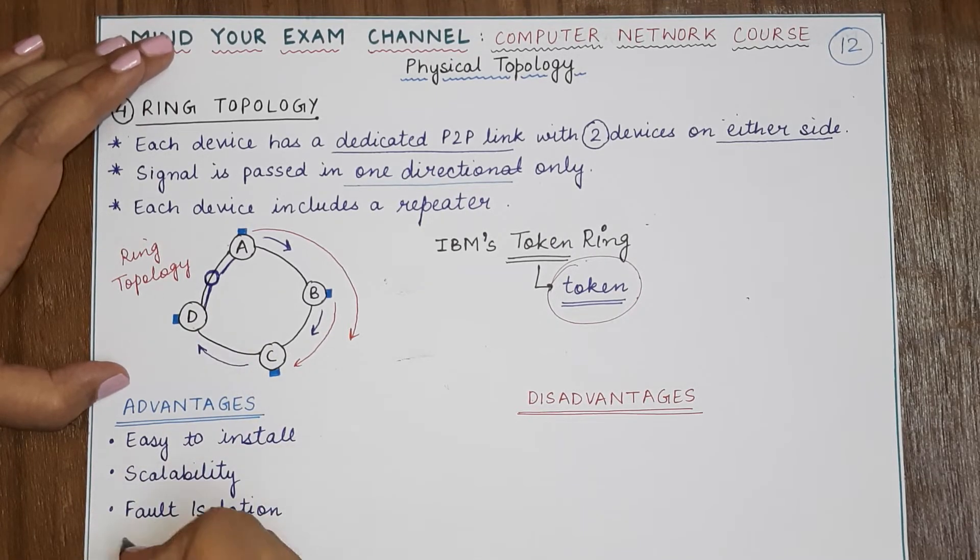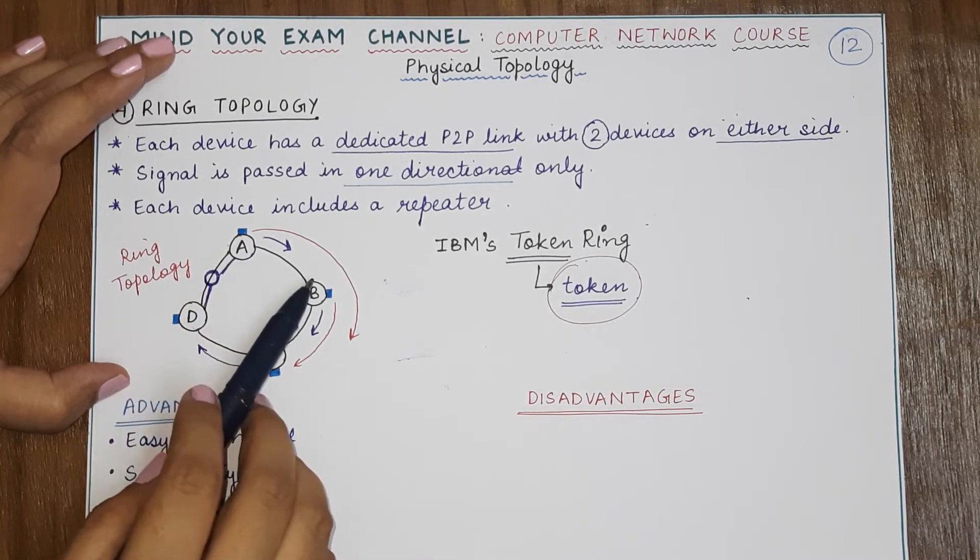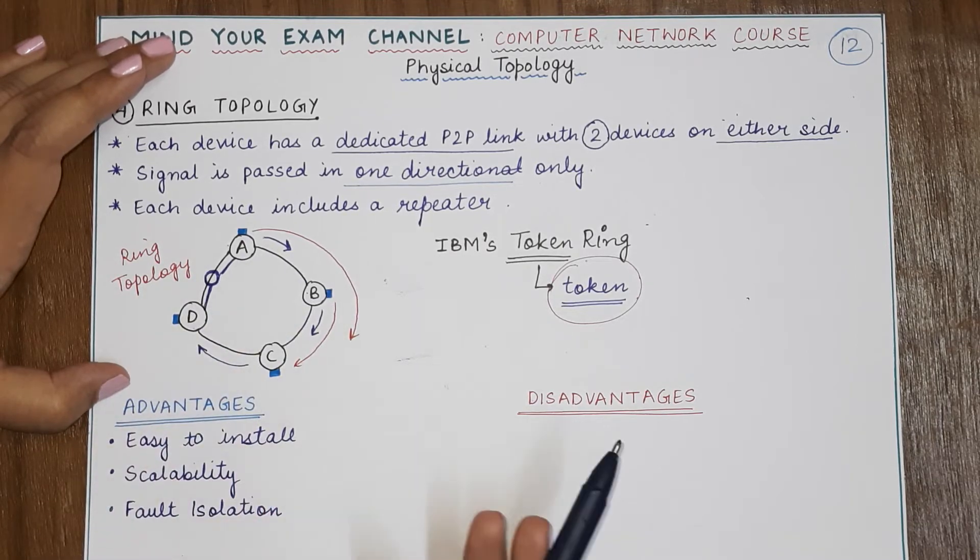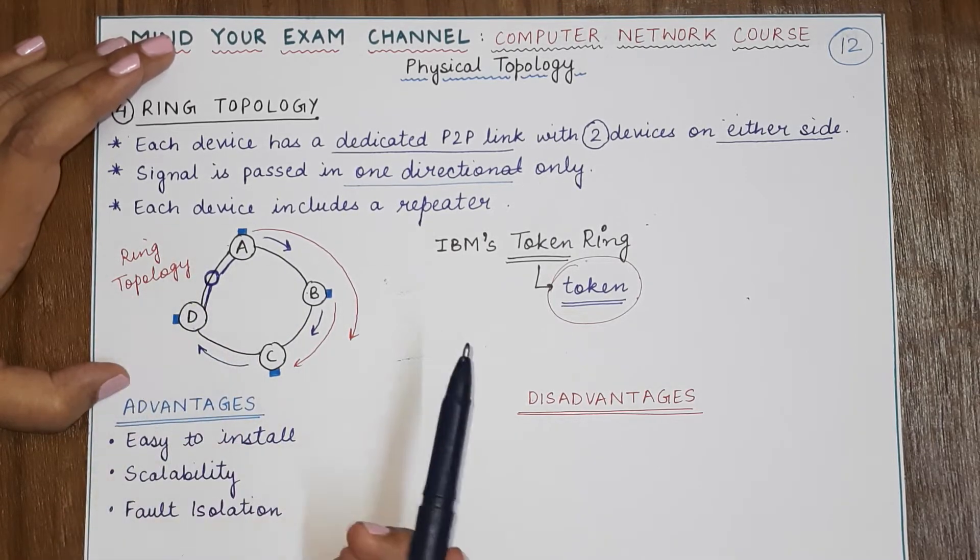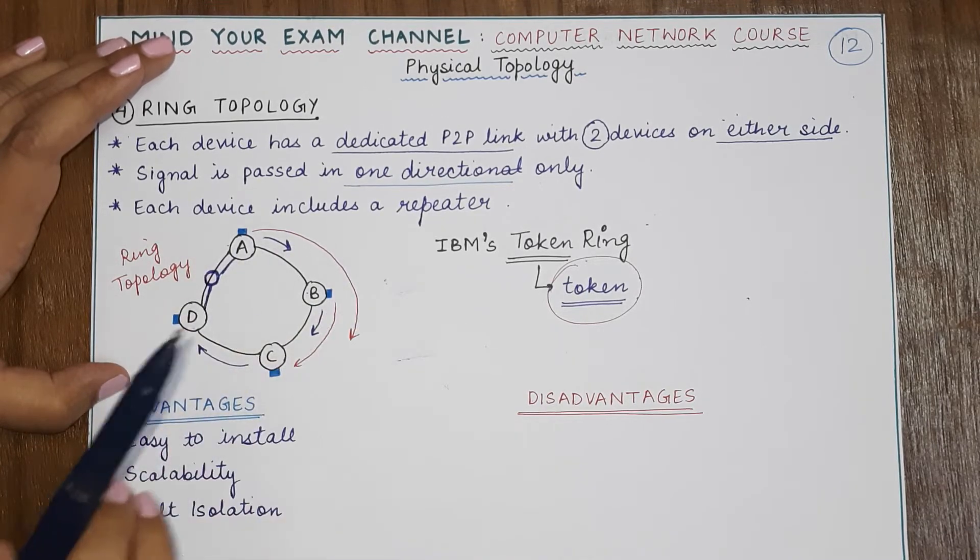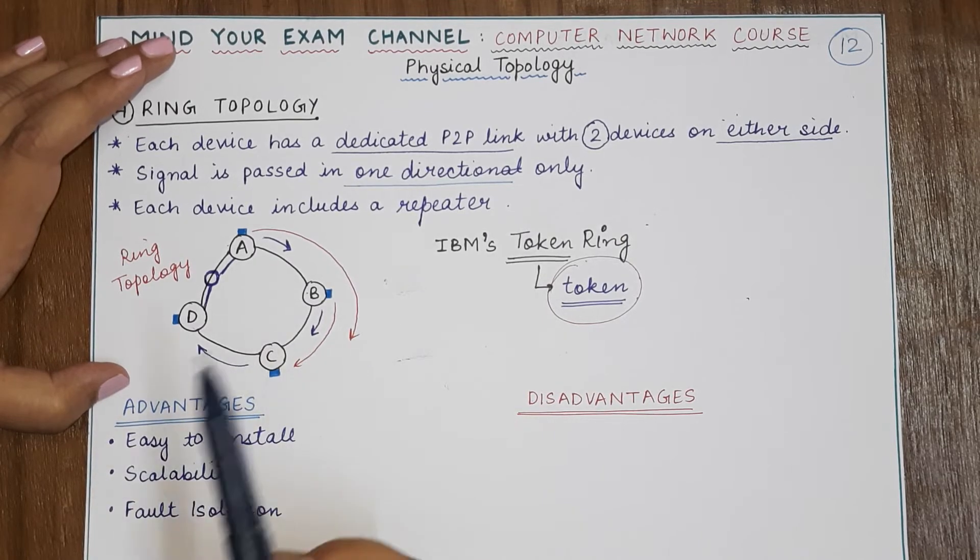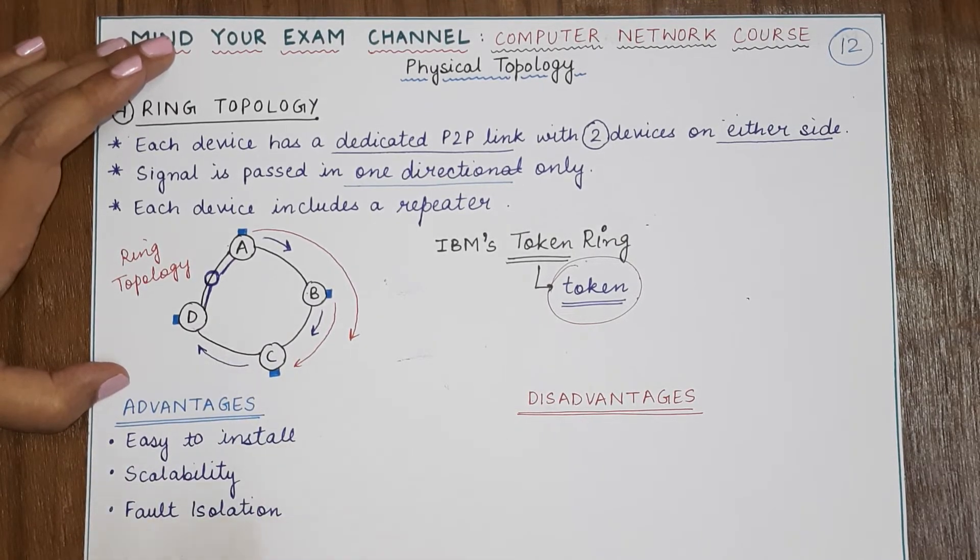Again, identification and isolation of faults are also easy. So if a particular link becomes faulty, it can be very easily understood where the entire problem is in the network because that communication is not happening between only those two devices because it is a dedicated link. This is always an advantage of the dedicated link.